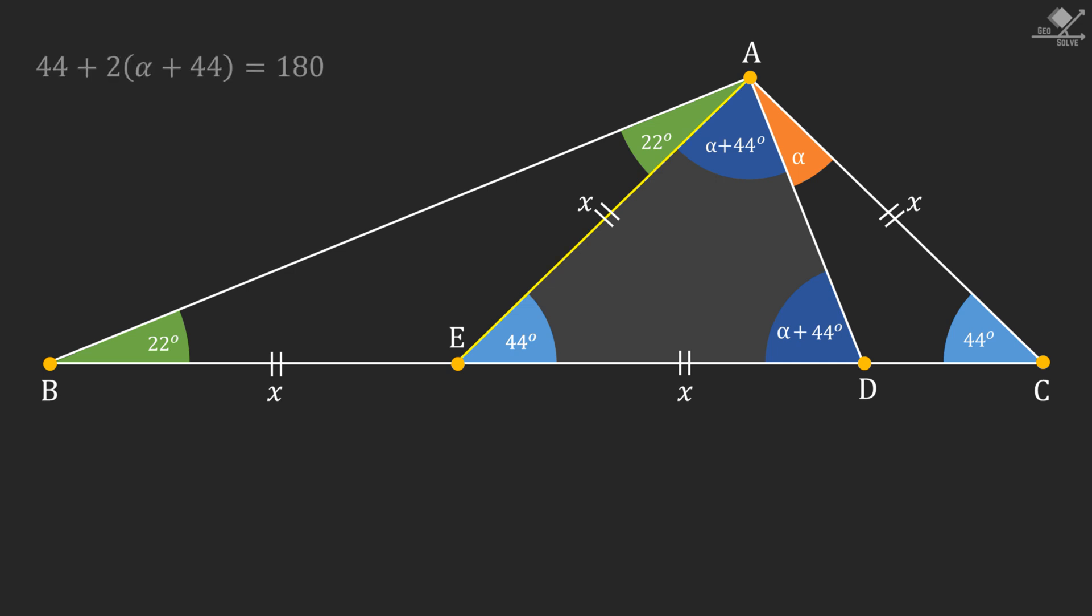From this triangle, we can write the following equation. And from this equation, we can calculate alpha equals 24 degrees. And this will be our final result.